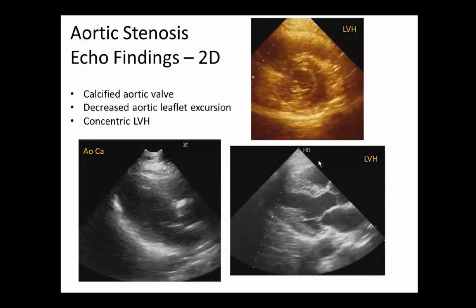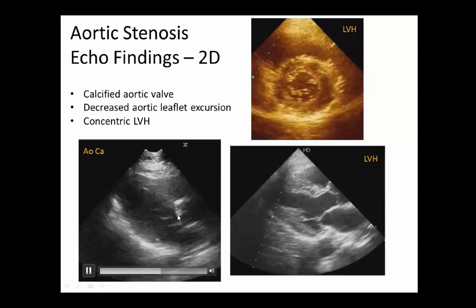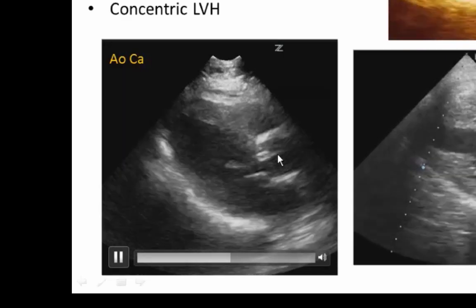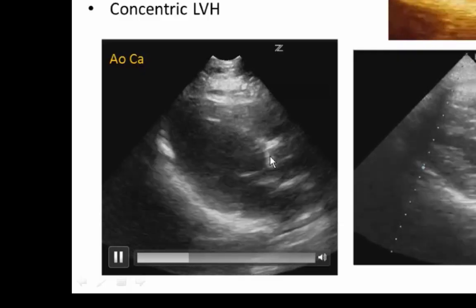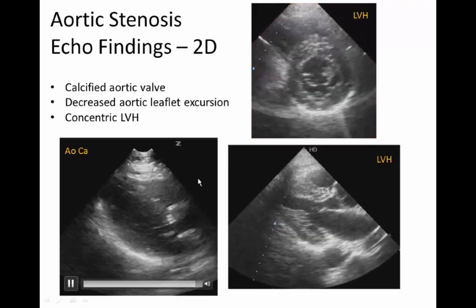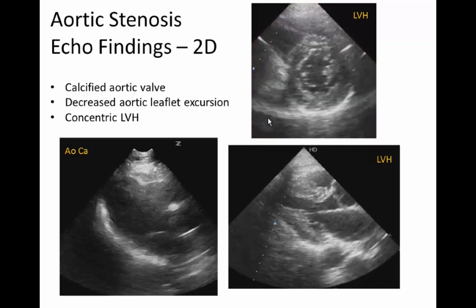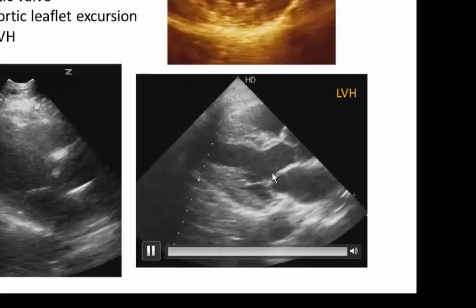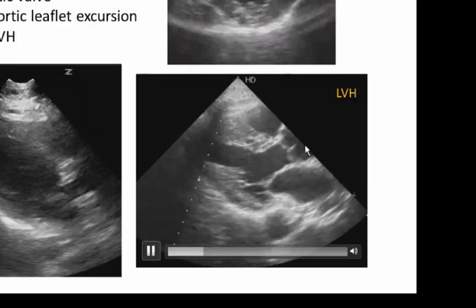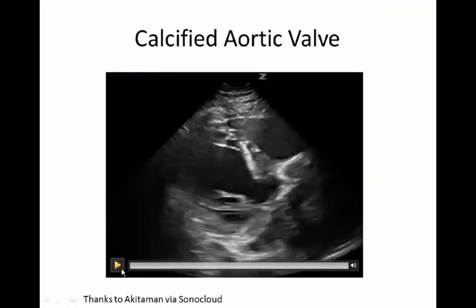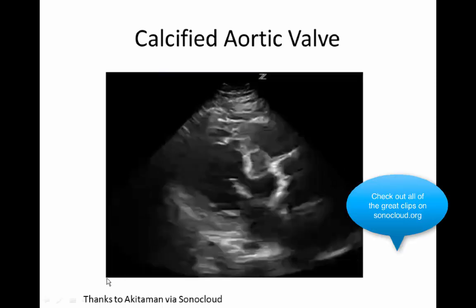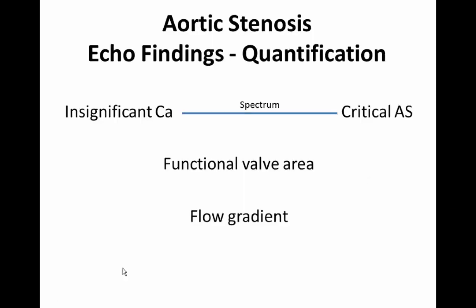Let's talk about the echo — that's the fun part. The most important 2D finding is a calcified aortic valve. Here we see a pretty heavily calcified aortic valve, and that's pretty easy to recognize. If you can get a parasternal long axis view, you can usually recognize this. The ventricle will also respond to increased pressure by becoming hypertrophied, usually in a concentric fashion. Here's another image showing a very calcified aortic valve — heavily calcified with just a tiny squeak of an opening.